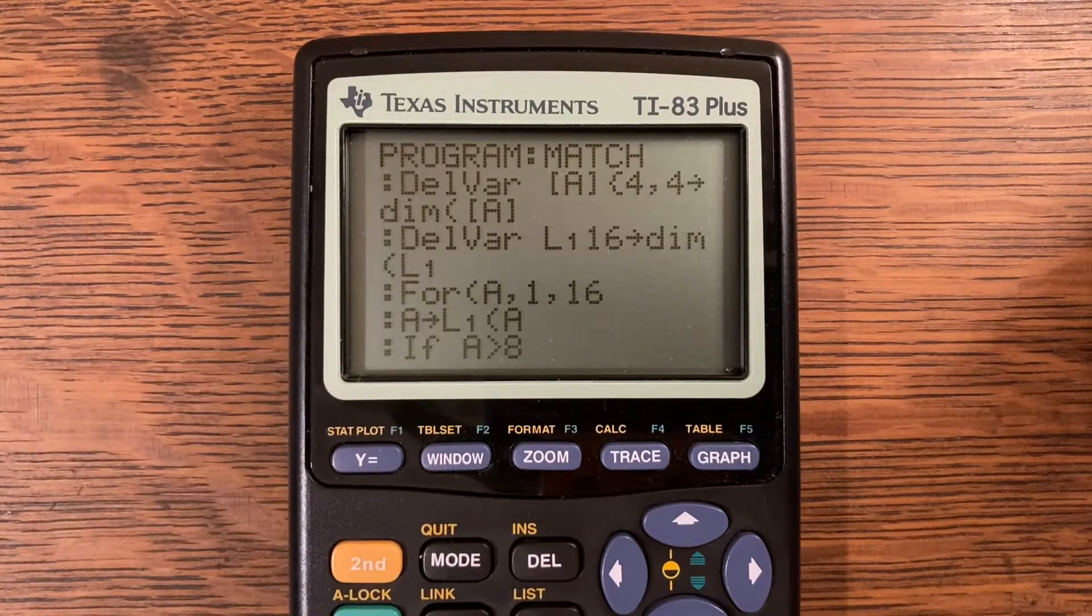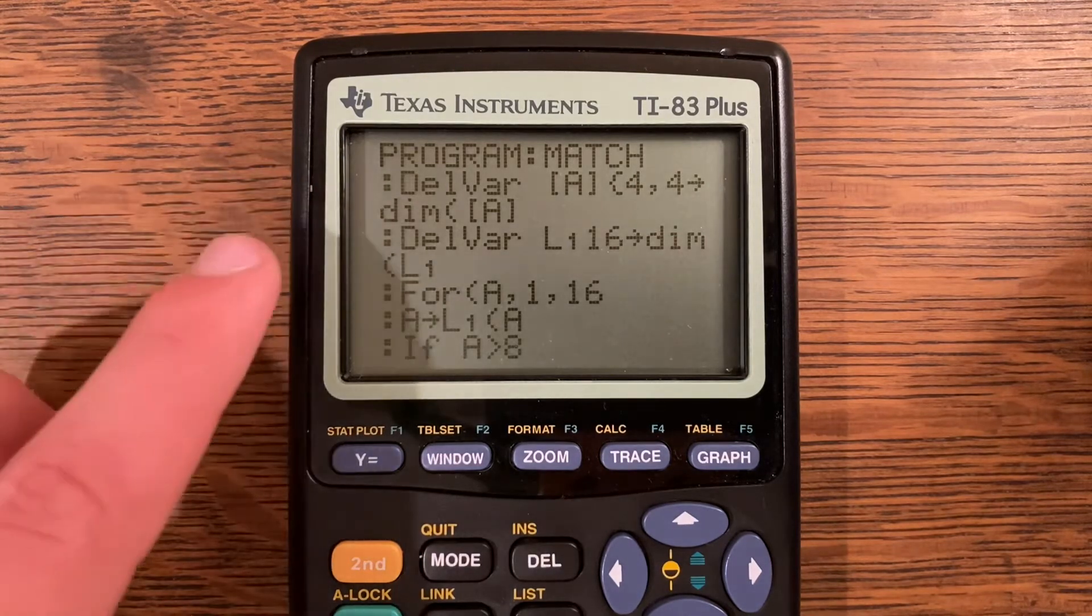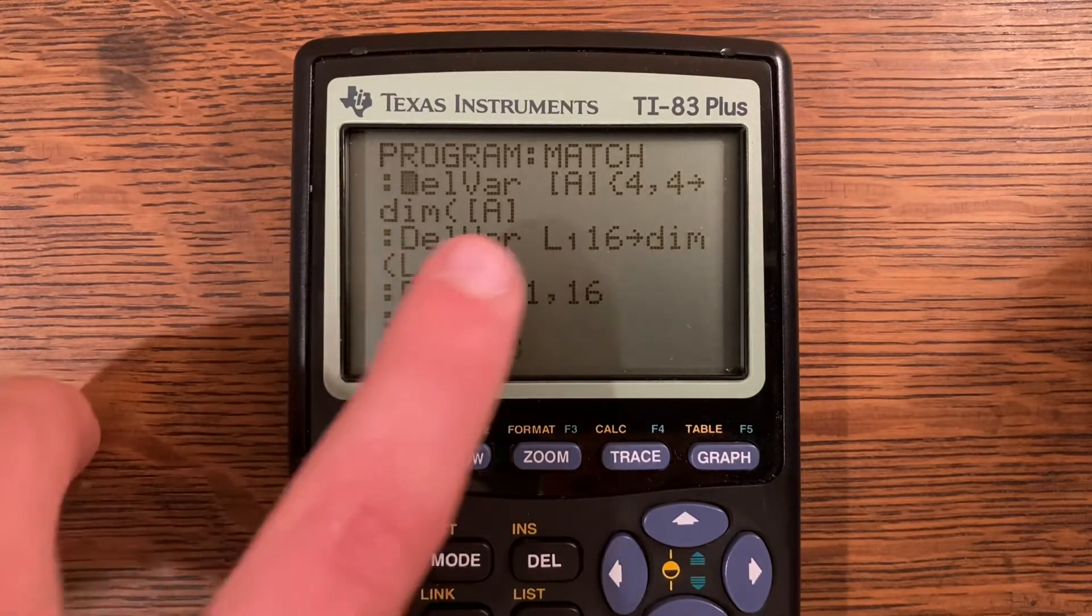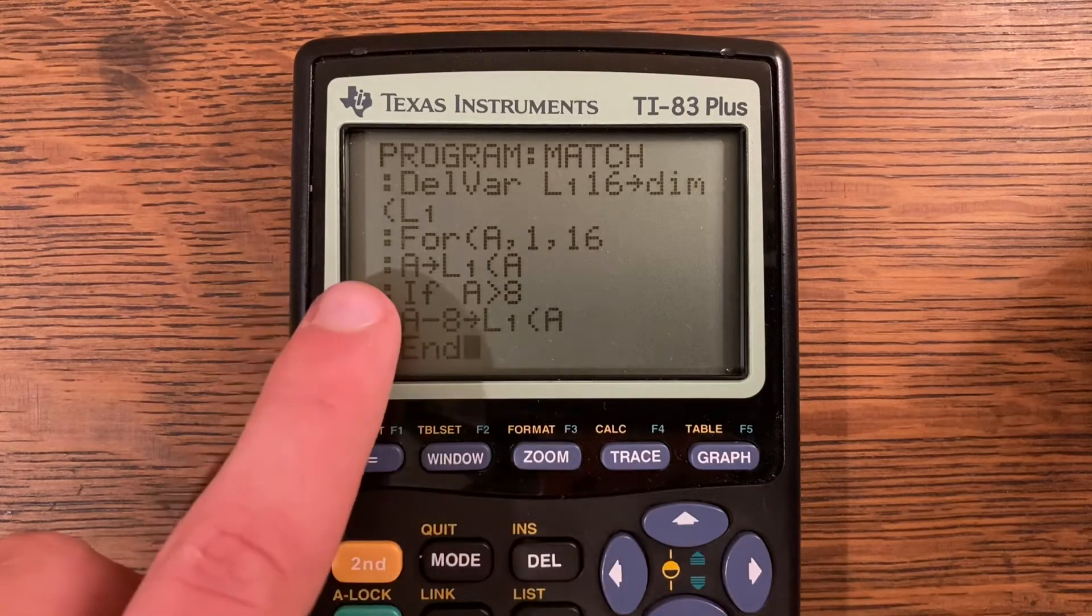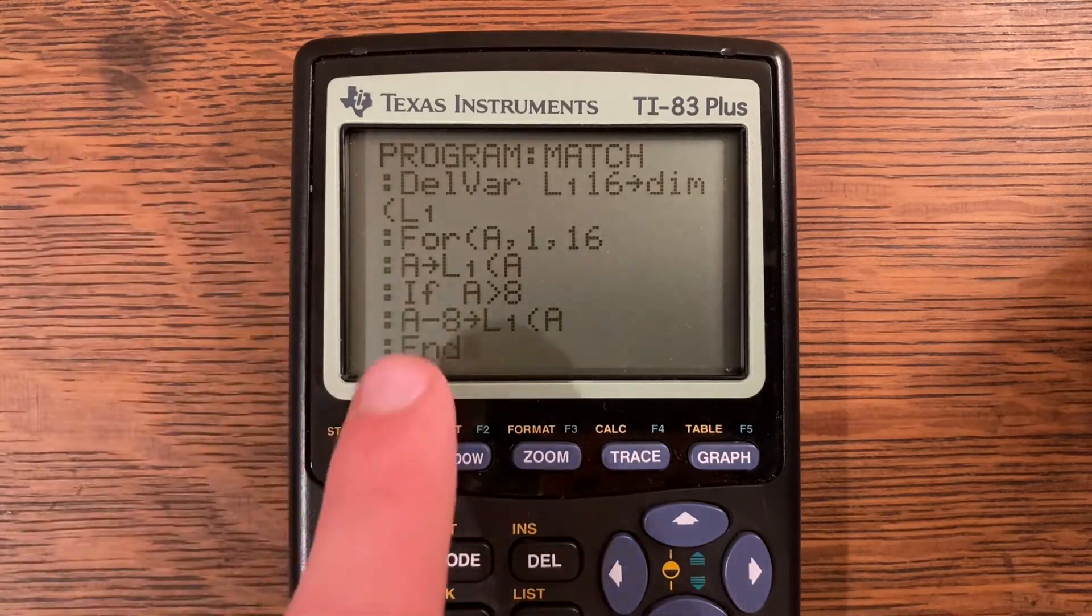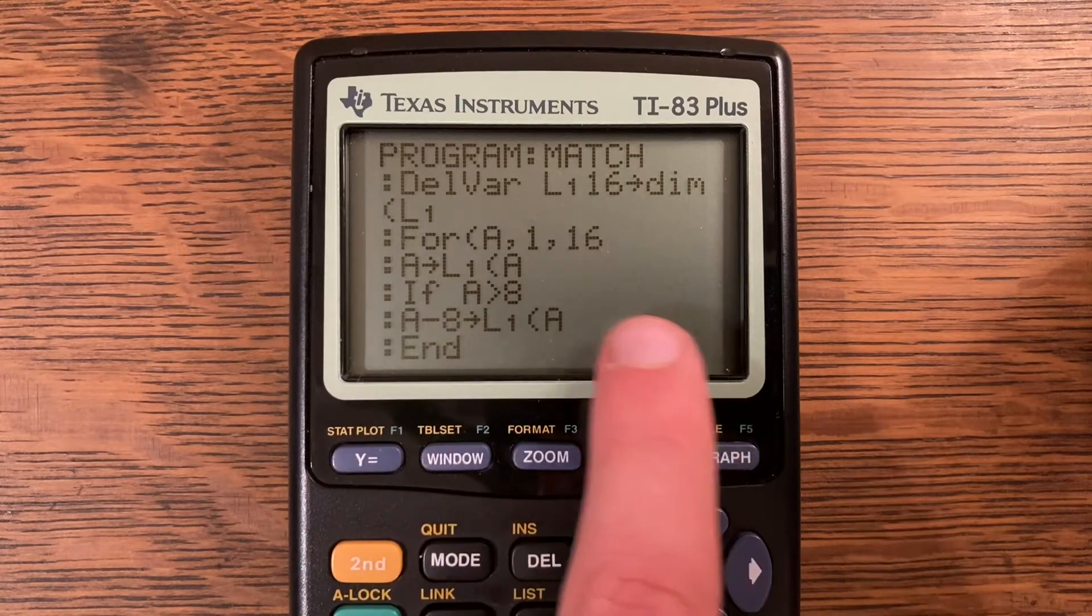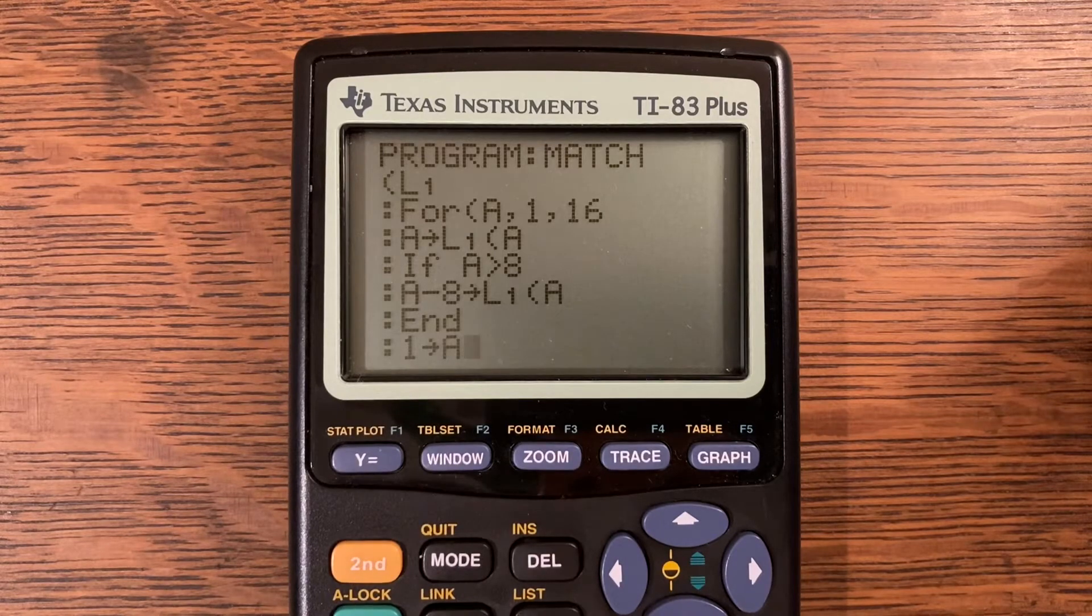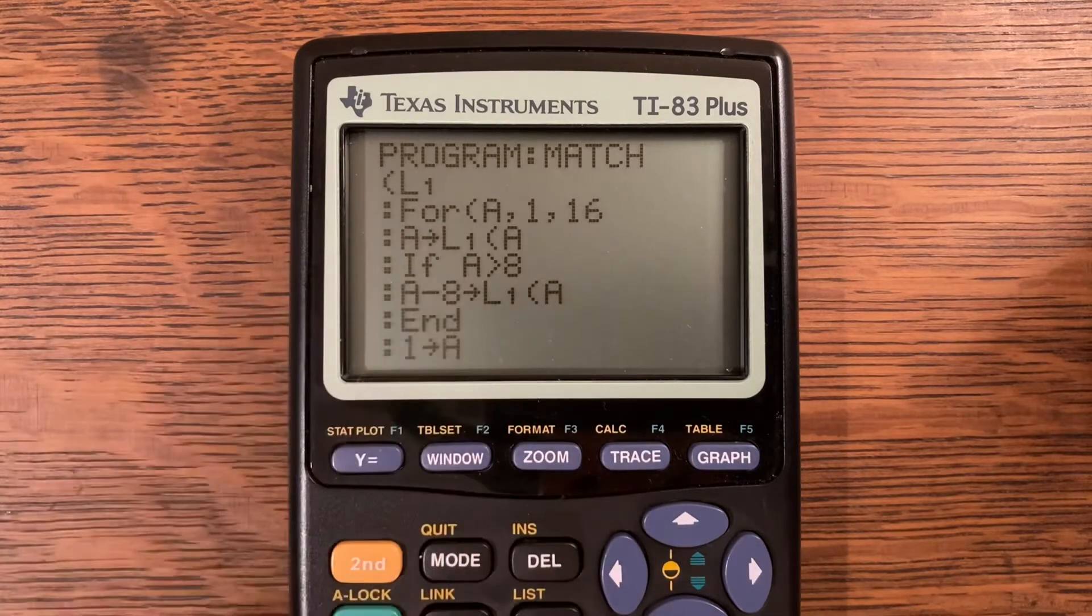Let me show you what program Match looks like. We'll start with DelVar matrix A and 4 comma 4 store into the dimensions of matrix A, initializing the matrix. Then also initializing L1: DelVar L1, 16 storing the dimensions of L1. For A comma 1 comma 16, A store into L1 at wherever A is.